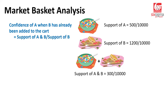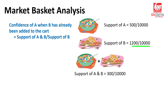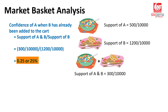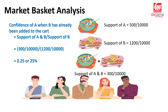These pieces of information are already available with us. Support of A and B is 300 divided by 10,000, and support of B is 1,200 divided by 10,000. If you plug those values in and solve for it, we get the answer as 0.25, or 25%.